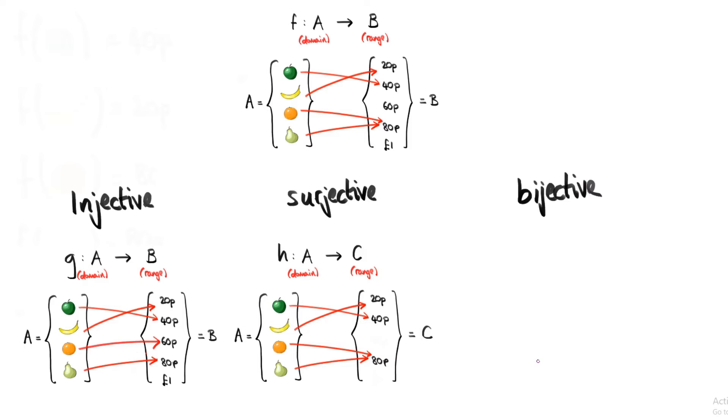That is, a function where there's no elements in B that don't have any arrows pointing towards them, and there are no elements in B which have more than one arrow pointing towards it. So B doesn't have either lonely elements or greedy elements.